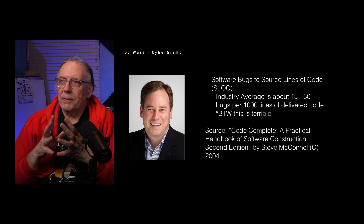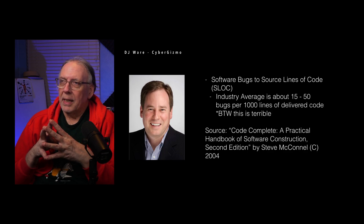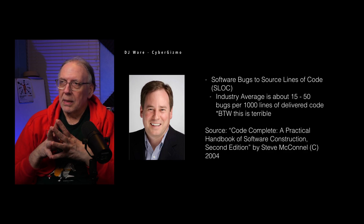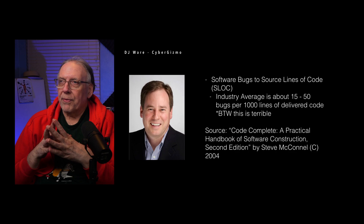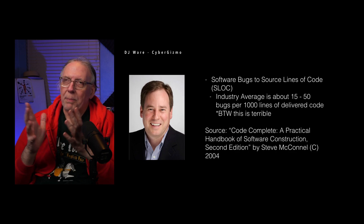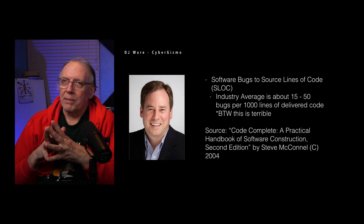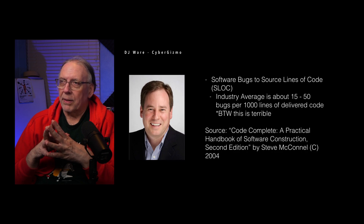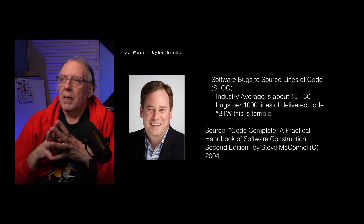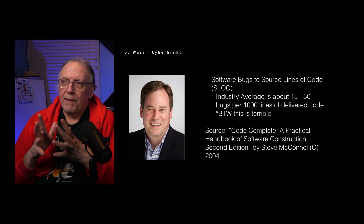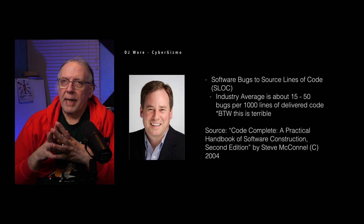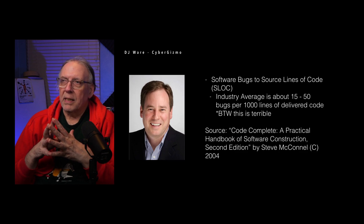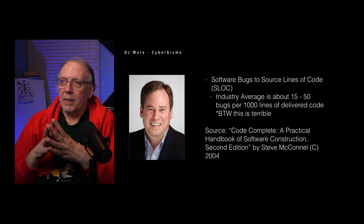Software bugs were written about by Stephen McConnell in 2004. There have been a lot of books on software engineering and bug management that occurred long before this, but in his book he found that the industry average for bugs was about 15 to 50 per thousand lines of delivered code.